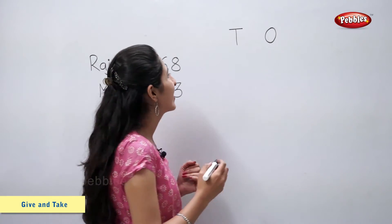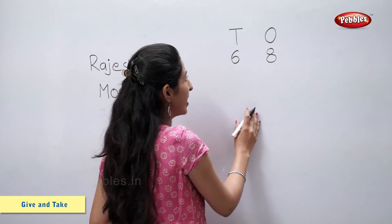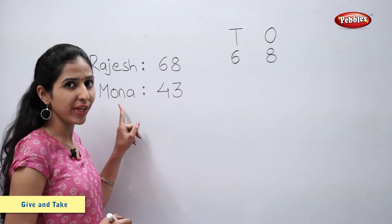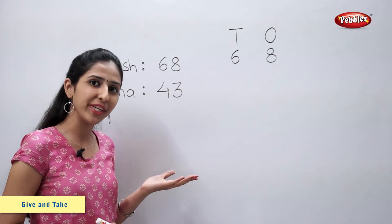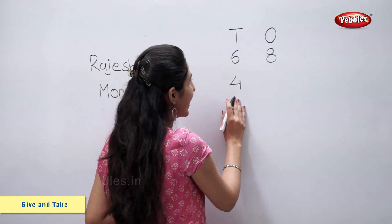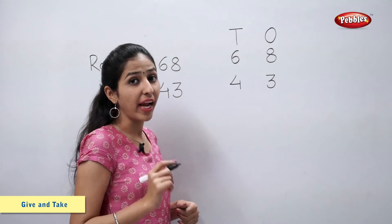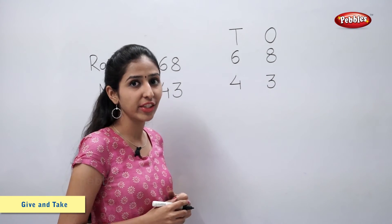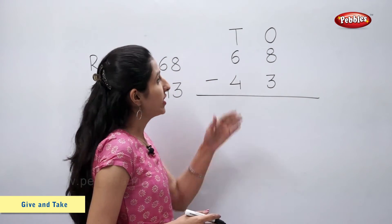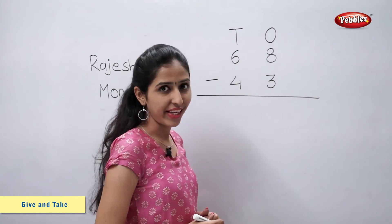68 is 6 tens and 8 ones. He gave 43 pearls to Mona — 43 means 4 tens and 3 ones. Now let's find the number of pearls left with Rajesh. So let's subtract ones first: 8 minus 3 is equal to 5.